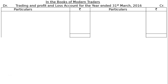The following balances were extracted from the books of Modern Traders on 31st March 2016. We are required to prepare final accounts for the year ended 31st March 2016 after taking into account the following adjustments. The final accounts include the trading account, profit and loss account, and balance sheet.